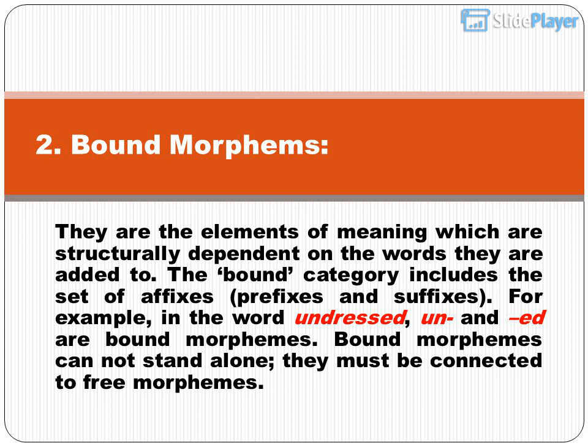Bound morphemes are the elements of meaning which are structurally dependent on the words they are added to. The bound category includes the set of affixes — prefixes and suffixes. For example, in the word 'undressed', 'un' and 'ed' are bound morphemes. Bound morphemes cannot stand alone; they must be connected to free morphemes.